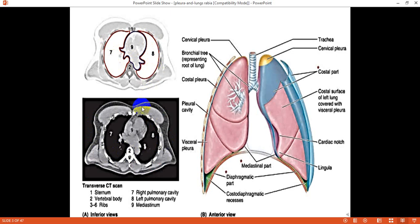Anteriorly it is limited by the sternum. Posteriorly, the vertebral column is indenting this cavity, and laterally there are ribs and intercostal spaces.